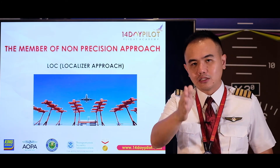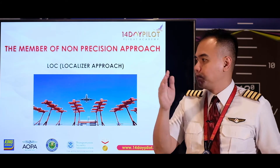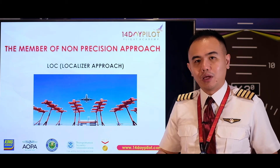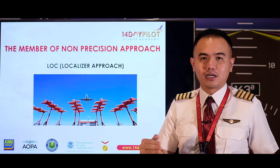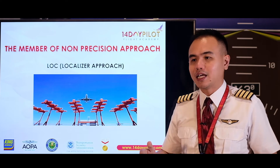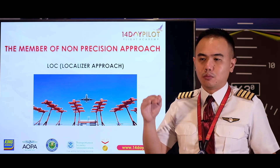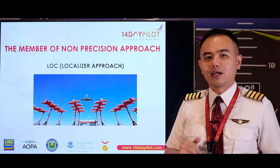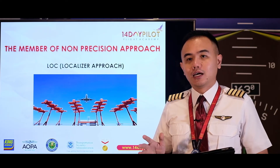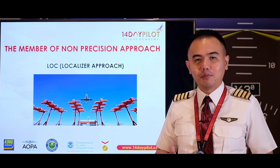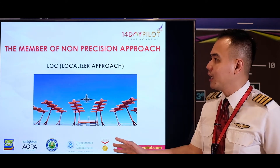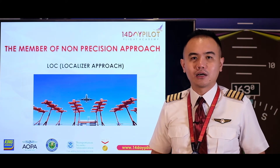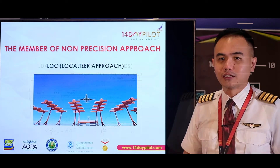You will be guided to the centerline but there is no vertical guidance. The minimums will be higher than a full ILS. When an approach has vertical guidance, the missed approach minimum will be a Decision Altitude, which is lower than the MDA. The localizer approach uses Minimum Descent Altitude, which is higher than the precision approach Decision Altitude.